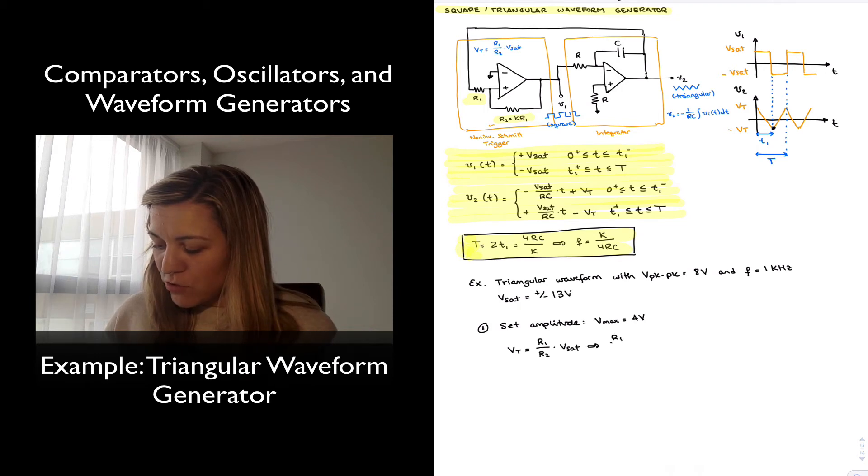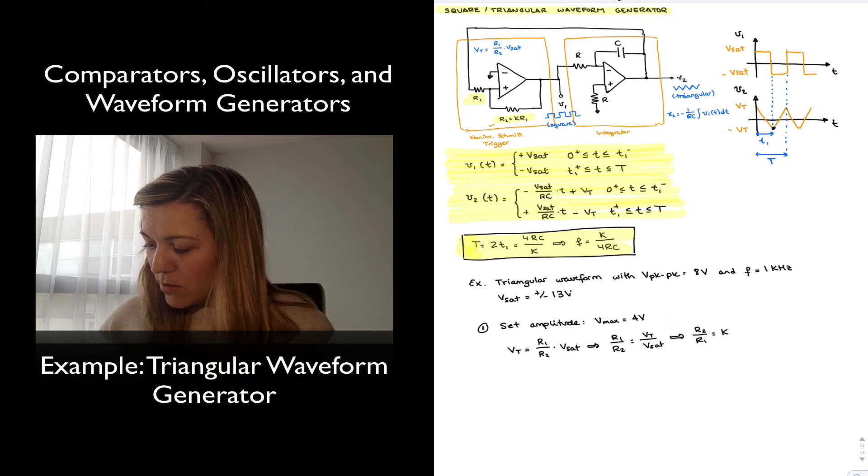That means that the ratio R1 divided by R2 is going to be equal to Vt over Vsat, or on the inverse. Since R2 is equal to K times R1, we can have R2 divided by R1, which is equal to K, equal to Vsat divided by Vt.